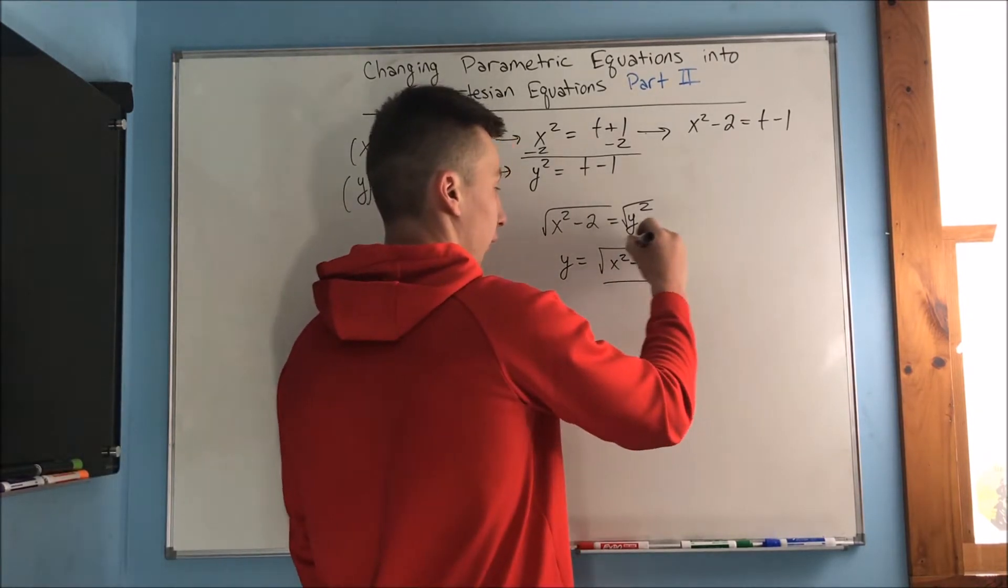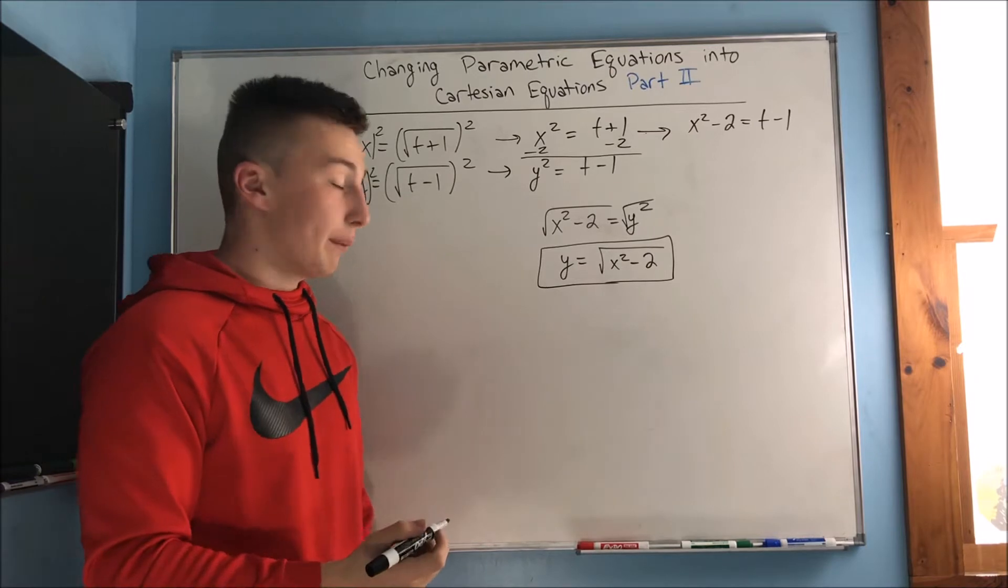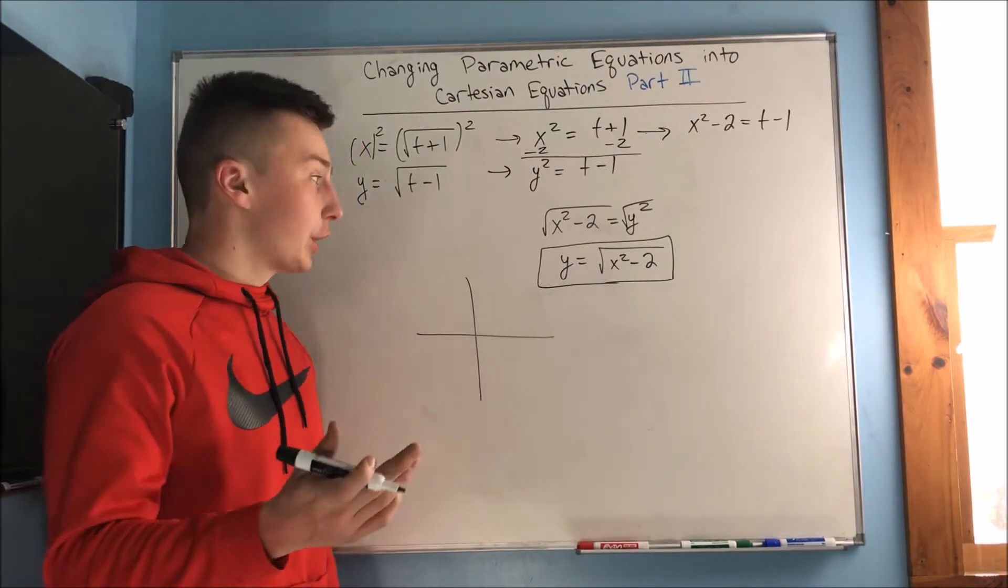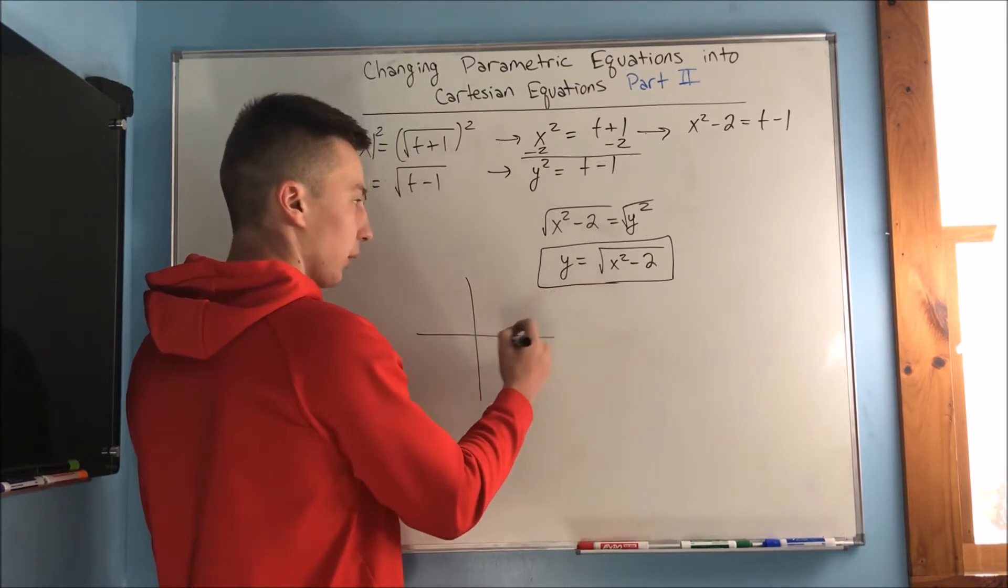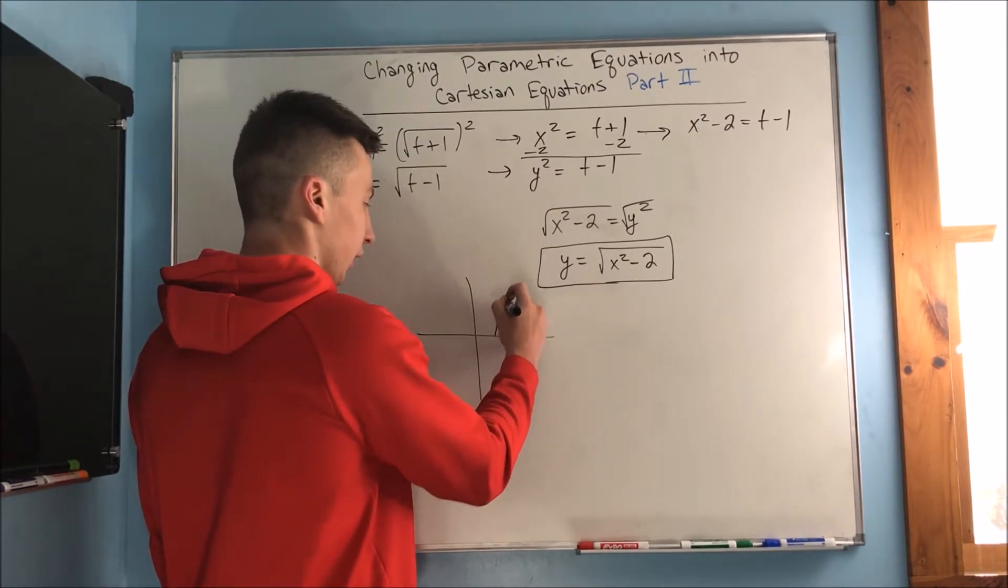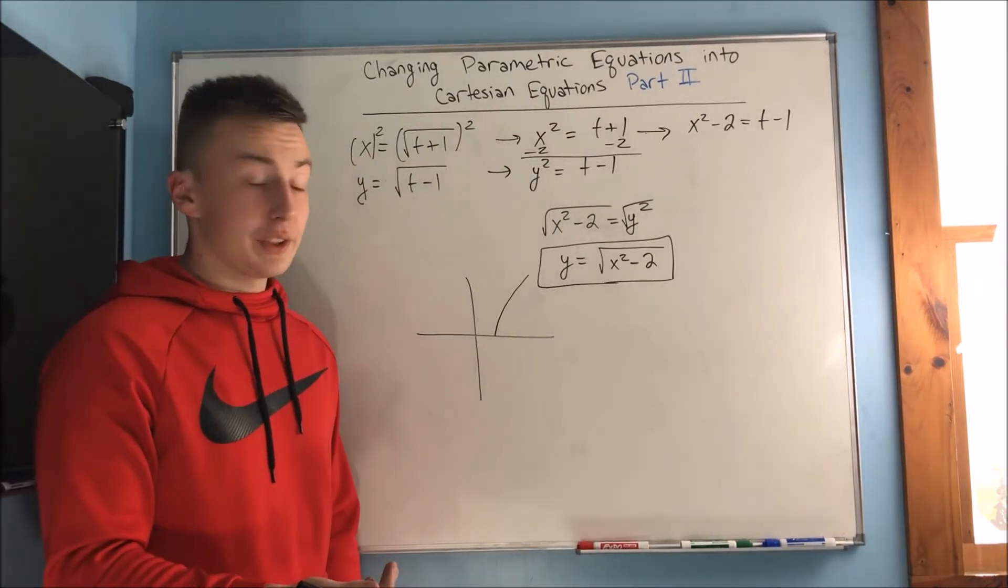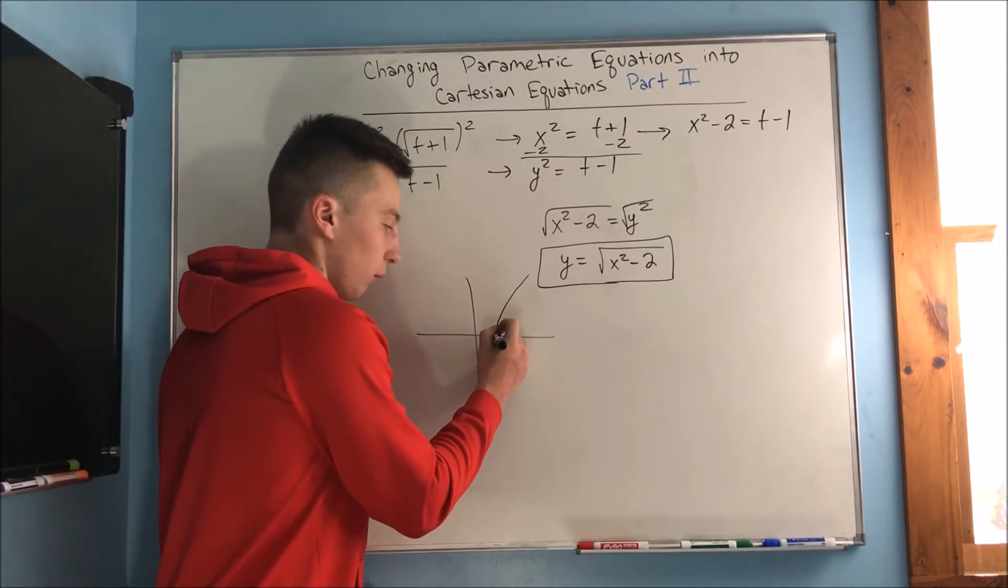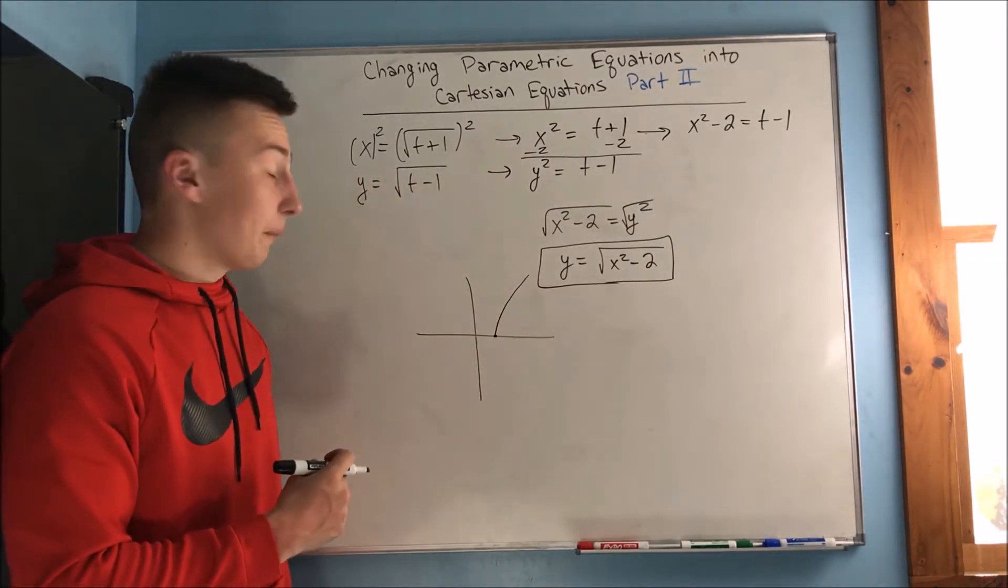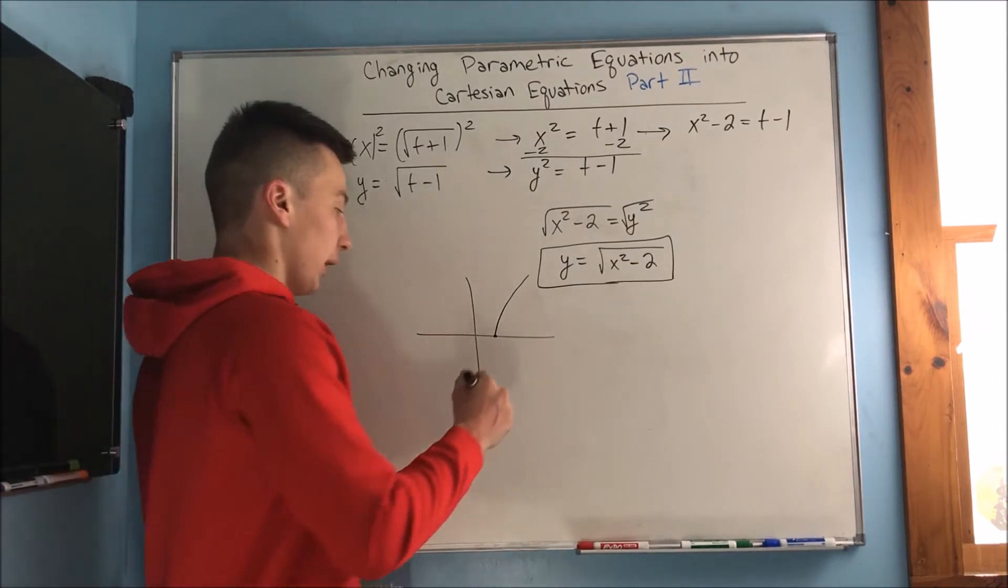Now all that's left to do is just draw this graph and give a direction. I'll do the hard part—I'll draw this graph, the square root of x squared minus 2, which is going to look something like this. Now we got to give a direction. What is going to be this point right here? Where is y going to equal zero? Well, we know that's going to be where we plug in 1 for t.